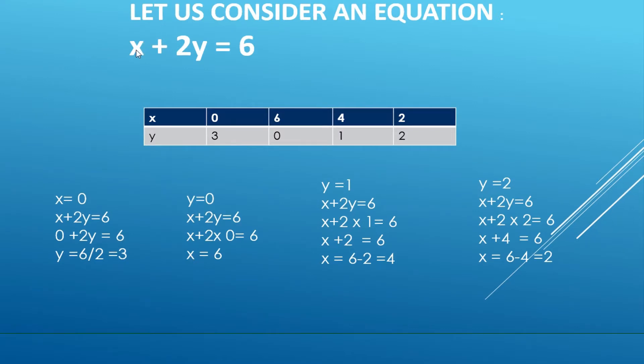Now children, we are going to represent this particular equation. It is a linear equation in two variables x and y, and we are going to represent this on a graph and we will see how its graph will look like. Then you will understand more why it is called a linear equation. Here this is having two variables and the degree of the equation is one.